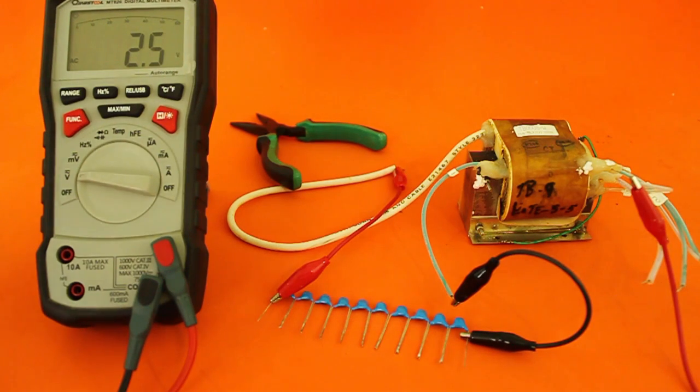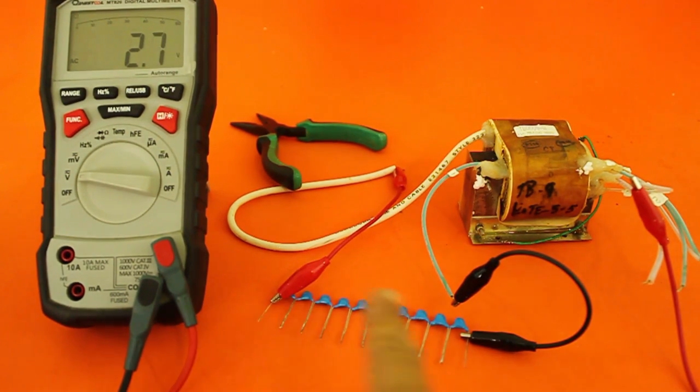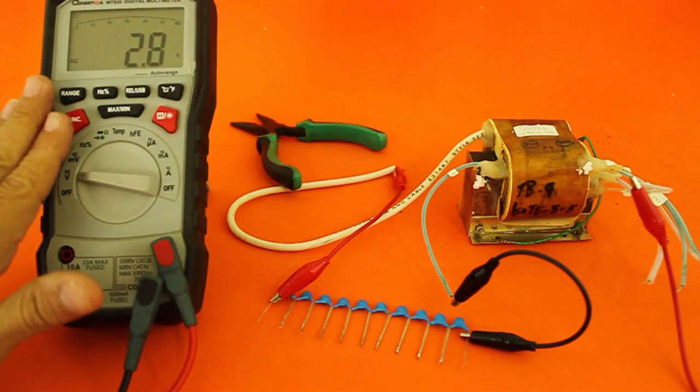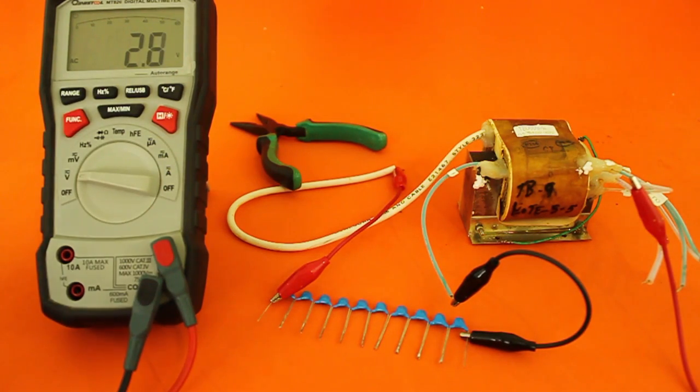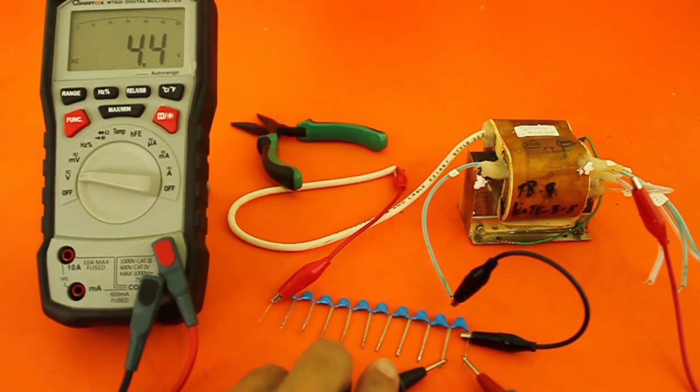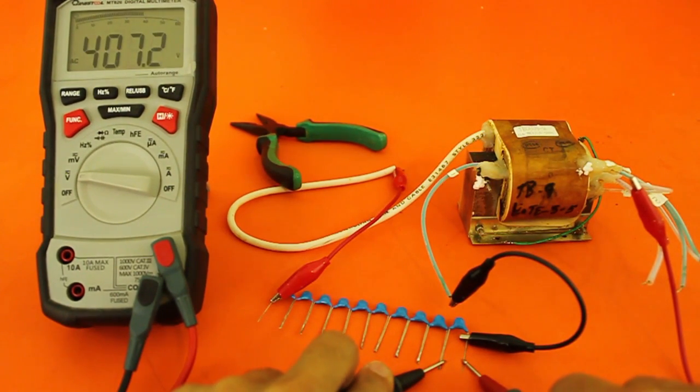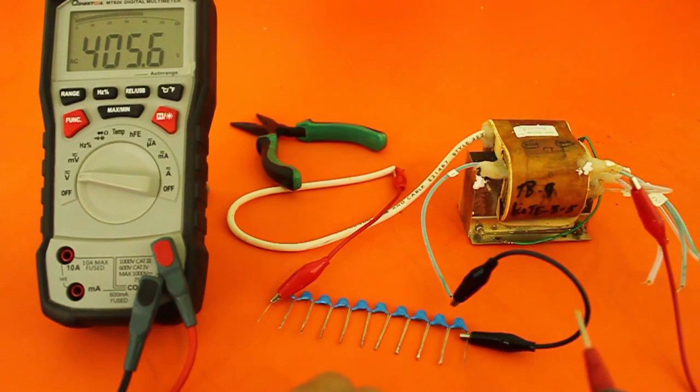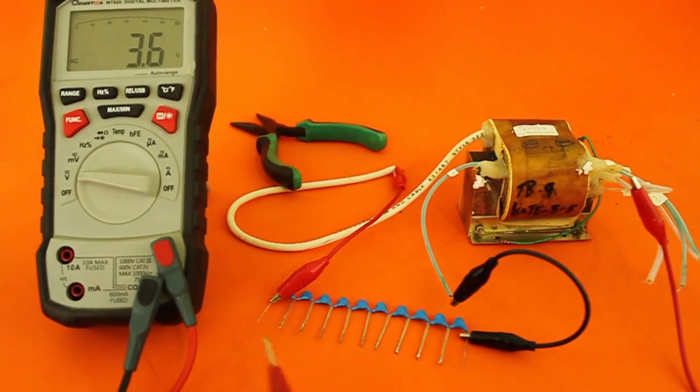Here I have the transformer connected to the voltage divider and the multimeter in the AC volts measuring setting. Now, I will measure the voltage at any of the capacitors, for example, the first one,